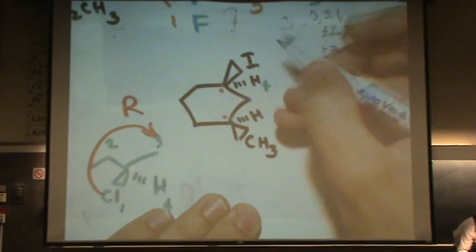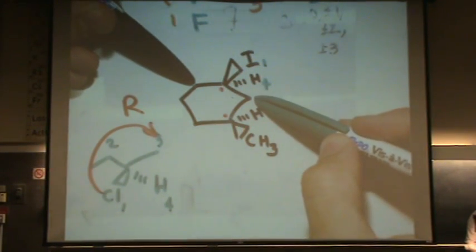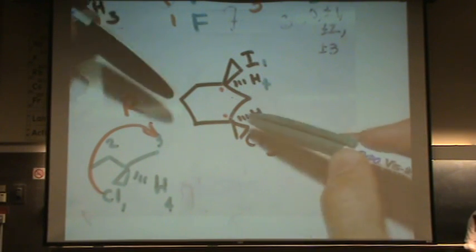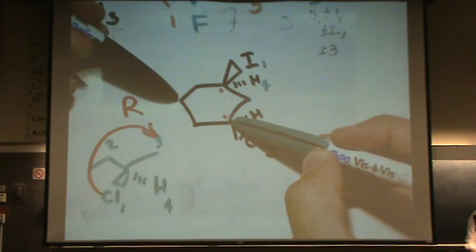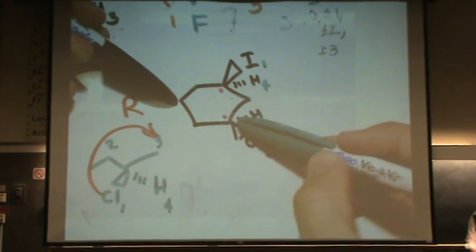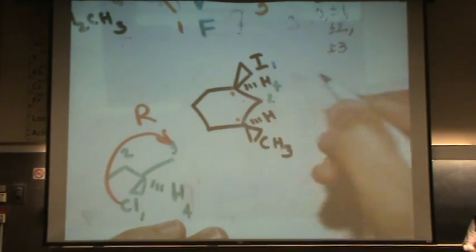Let's try the one on top first. We've got four here — hydrogen is lowest priority. This would be one — chlorine is highest. To get two and three, that's a little trickier. These are both carbons, but when you go to the next carbon, this one up here on the left has two hydrogens bonded to it, where this carbon on the right has one hydrogen and a methyl. So the one on the right has higher priority. Two and three.